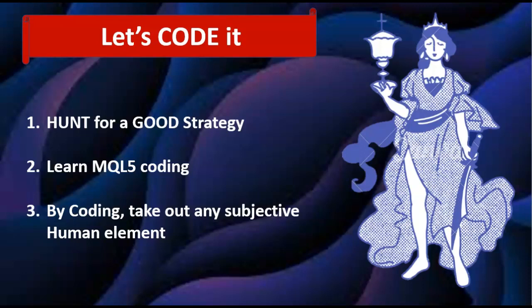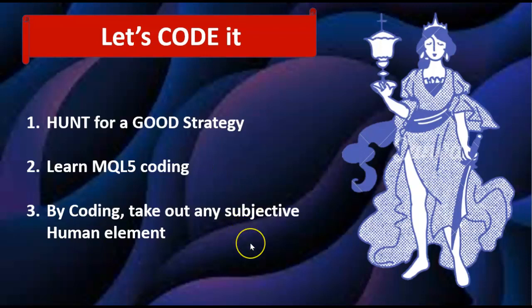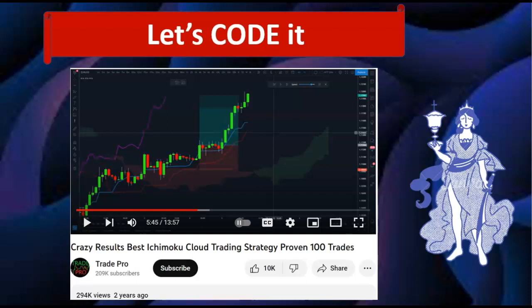Hey guys, back again with another video in the Let's Code It series where we're going to be hunting for good strategies on YouTube and coding them into MQL. I'll show the coding process as well so we learn, and by coding we take out the subjective human elements so when we test we know the rules are being run 100% of the time. Today we're looking at an Ichimoku based strategy by TradePro — supposedly with crazy results. Let's get to coding.